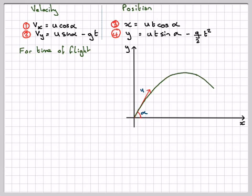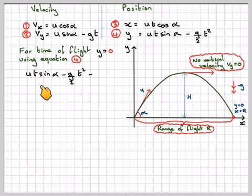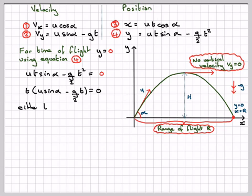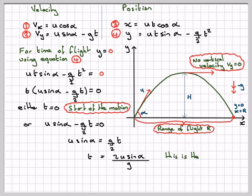For the time of flight, at the landing point y = 0. Using equation 4 set equal to zero: u·t·sin(alpha) − (g/2)·t² = 0. Factoring out t: t·[u·sin(alpha) − (g/2)·t] = 0. This gives t = 0 (the starting position, which we discard) or u·sin(alpha) = (g/2)·t, so t = 2u·sin(alpha) / g. This is the time of flight.